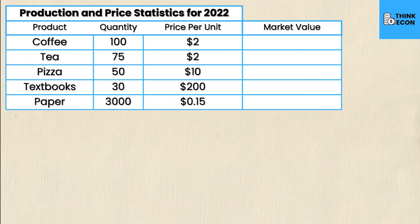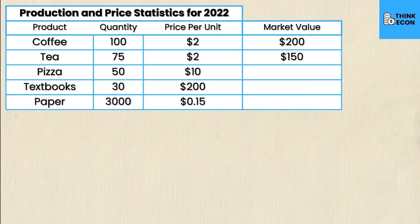To calculate the market value we simply multiply quantity times price. For coffee that's 100 times $2.00, which is $200. For tea that's 75 times $2.00, which is $150. For pizza that's 50 times $10.00, which is $500. For textbooks that's 30 times $200, which is $6,000. And finally for paper that's 3,000 times $0.15, which is $450.